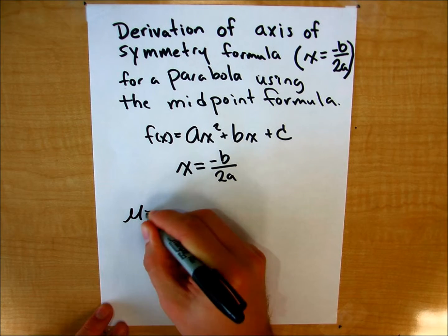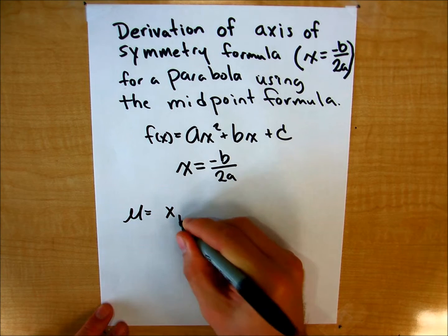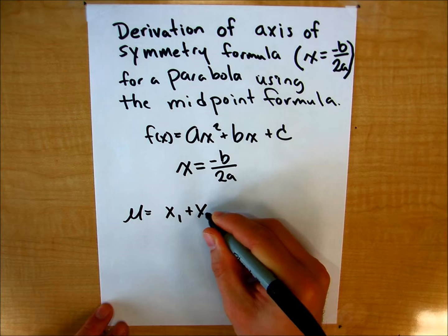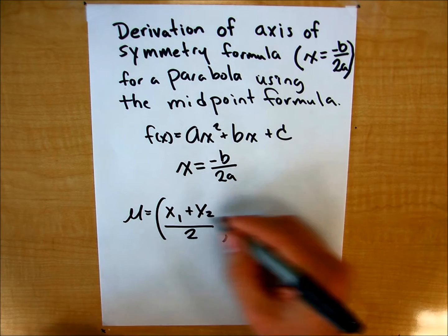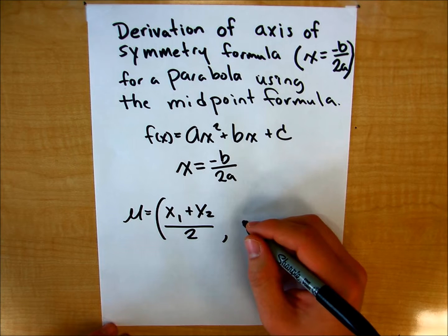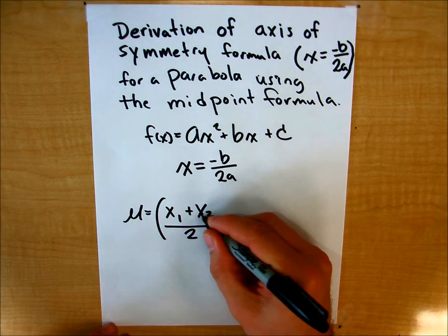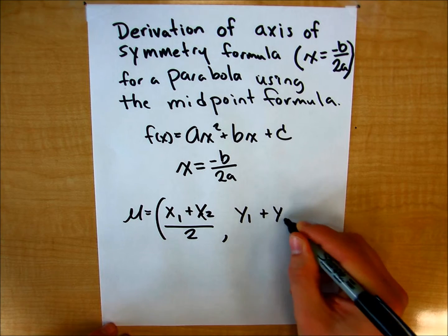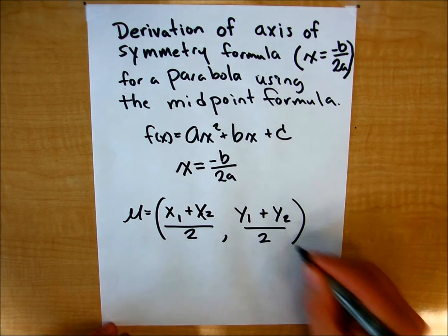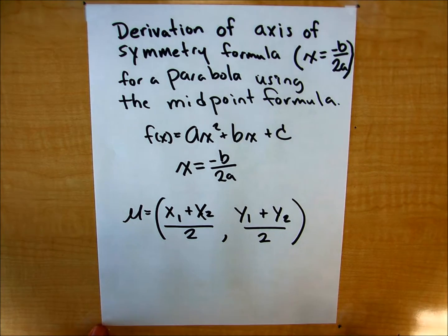So the midpoint formula is x sub 1 plus x sub 2 over 2, so that's your x value, and your y value is y sub 1 plus y sub 2 divided by 2.